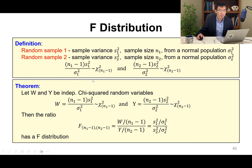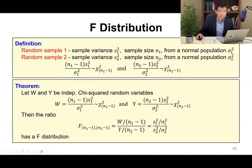This is the sampling distribution of S-squared. Similarly, (N2 - 1)S2-squared / sigma2-squared is chi-squared with N2 - 1 degrees of freedom. Because of the definition of the F distribution, dividing each chi-squared variable by its own degrees of freedom gives us S1-squared / sigma1-squared over S2-squared / sigma2-squared, which is F-distributed with N1 - 1 and N2 - 1 degrees of freedom.